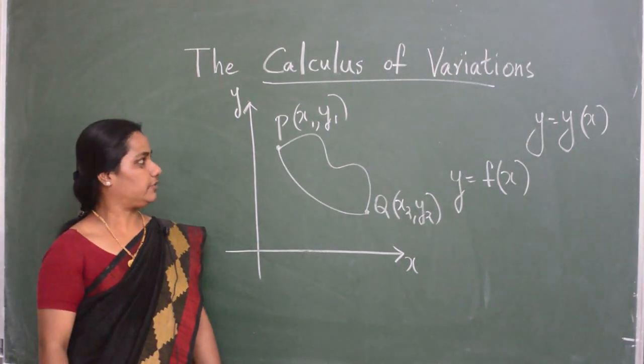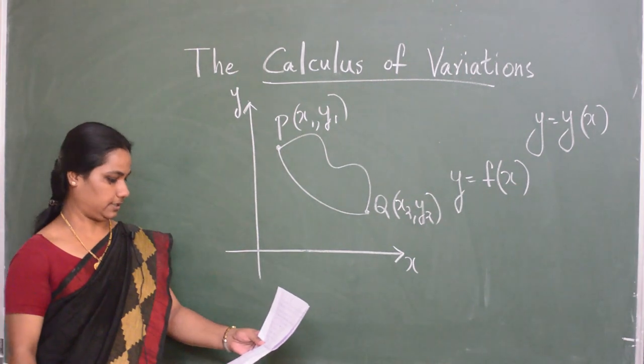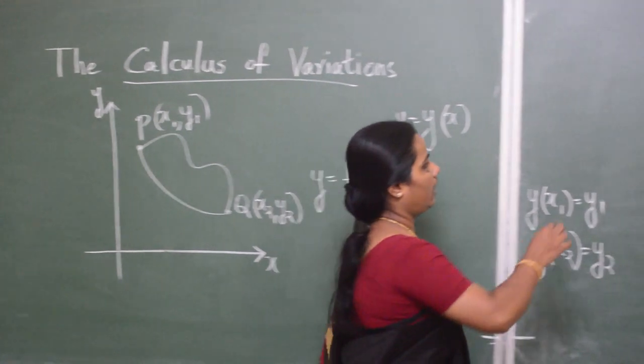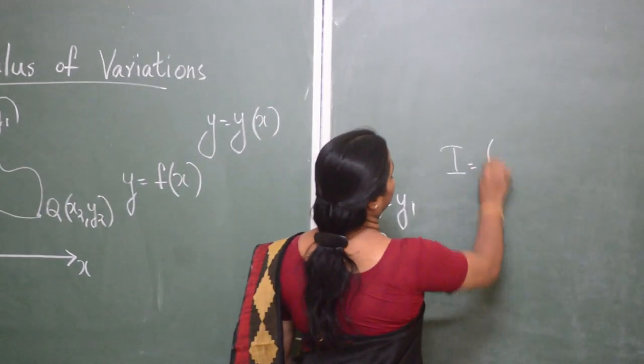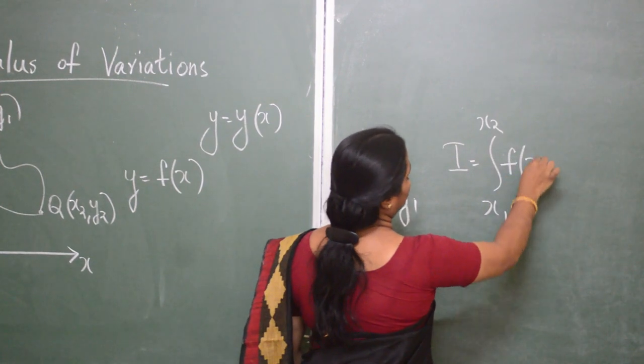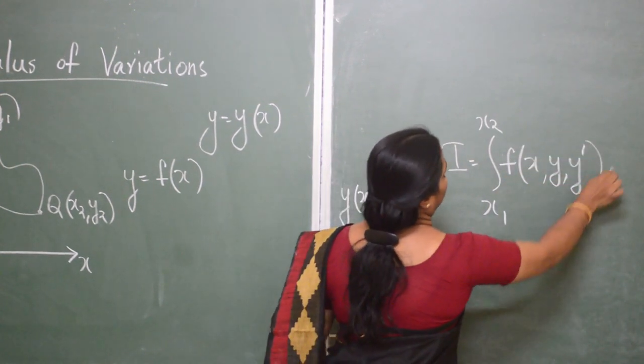We wish to find the function in this family that minimizes an integral of the form i equal to integral x1 to x2, f of x, y, y dash, dx.